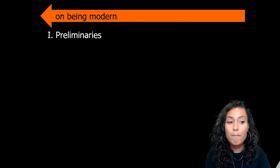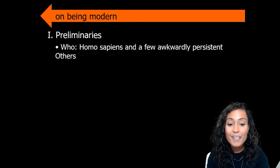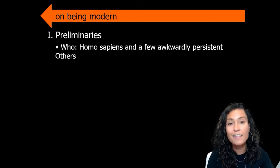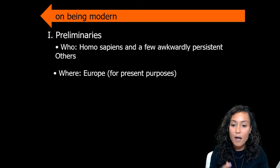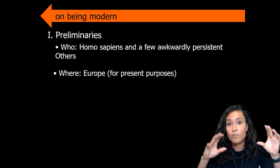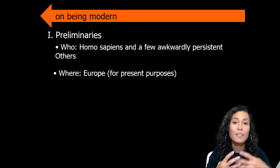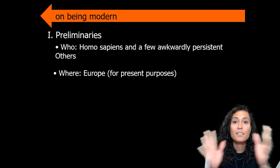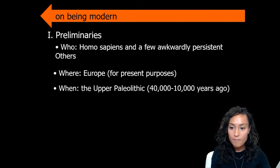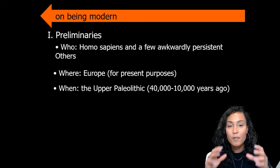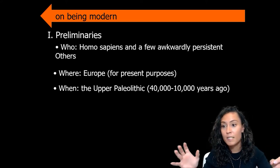When we talk about behaviorally modern humans, we are primarily referring to our direct Homo sapien ancestors living in Europe between about 40,000 and 10,000 years ago. Homo sapiens are living throughout the Old World in both Africa and Eurasia, and are beginning to spread out and populate other further afield places. But for today, we're really just going to focus on Europe and the Upper Paleolithic, defined as that period between 40,000 and 10,000 years ago.